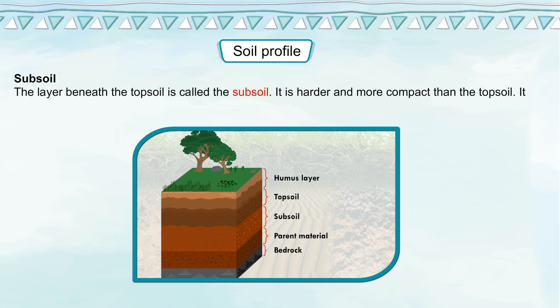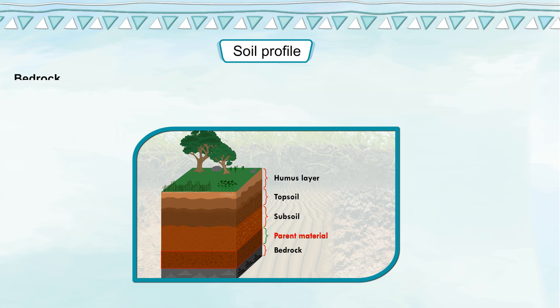Subsoil. The layer beneath the topsoil is called the subsoil. It is harder and more compact than the topsoil. It does not have much humus, but it is rich in soluble minerals.